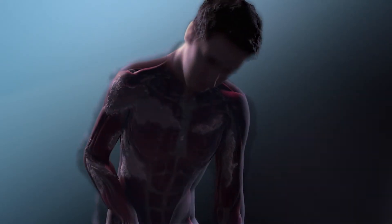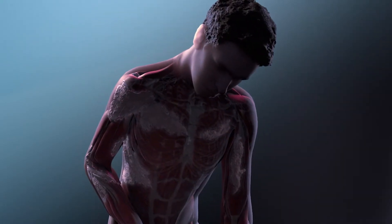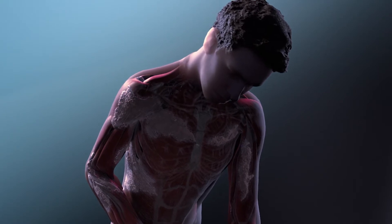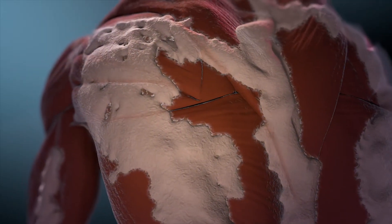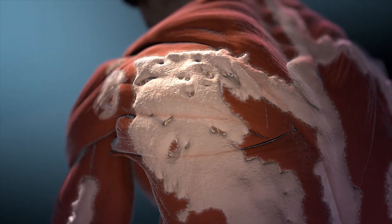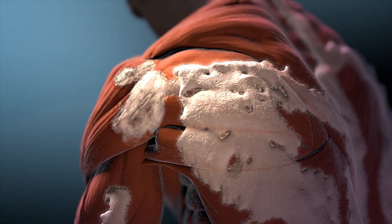Fibrodysplasia ossificans progressiva, or FOP, is a severely disabling myopathy in which extraskeletal bone forms and accumulates over time within muscles and soft tissues.